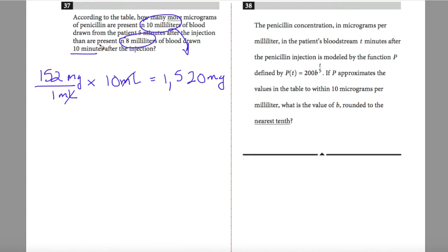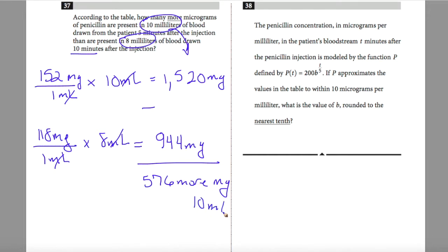Likewise, if I have 10 minutes after my injection, I go back to my table and see that I have 118 micrograms of penicillin present for every one milliliter. But we are drawing 8 milliliters of blood. 118 times 8 is going to be 944 micrograms. The question is asking how many more micrograms are present in 10 milliliters. I'm simply going to take the difference: 1,520 minus 944, which gives me a total of 576 more micrograms.